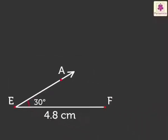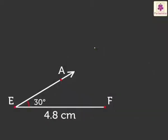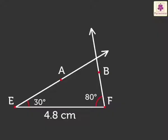Step 3. Construct Angle BFE of 80 degrees using a protractor. Step 4. Produce Ray EA and Ray FB such that they intersect at point D to get Triangle DEF.